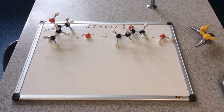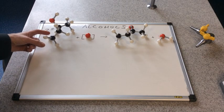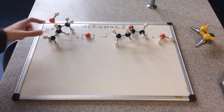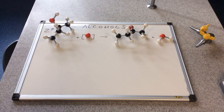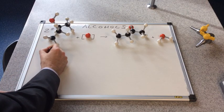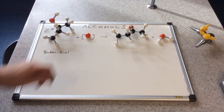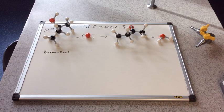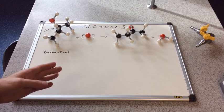We're going to move on to secondary alcohols now. We've got this secondary alcohol here with four carbons and the hydroxyl group on carbon number two. So this is butan-2-ol. Same oxidizing agent as before: acidified potassium dichromate. And we would heat this up.